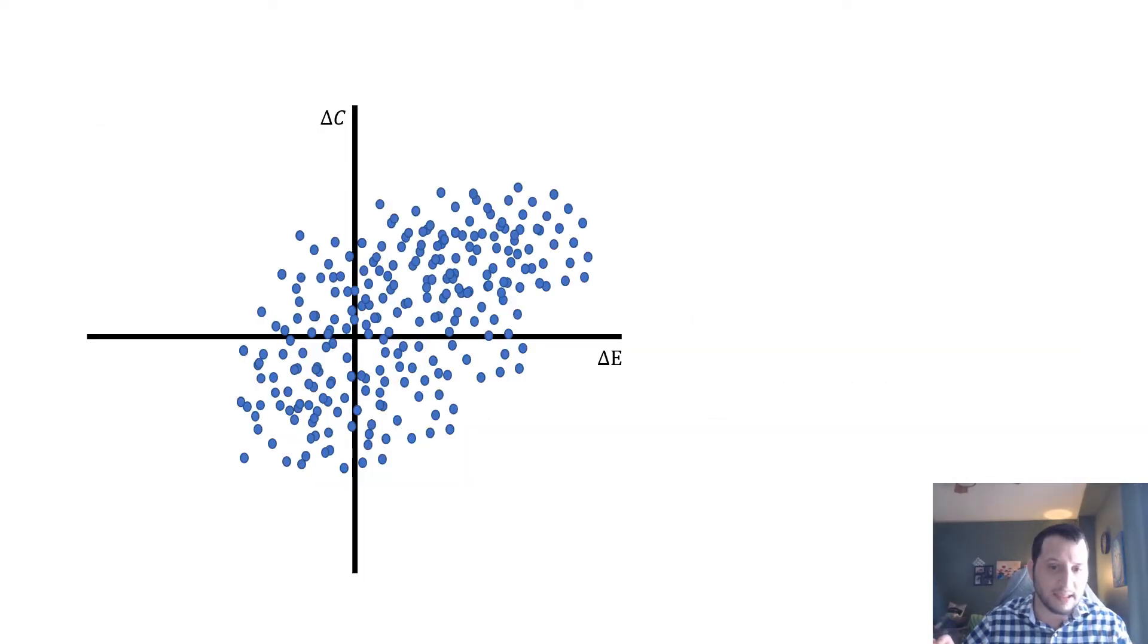When we run a probabilistic sensitivity analysis, we're going to be plotting each one of these ICERs that come out of our model in each generation. This is going to be visualized by a set of points on our ICER plane.